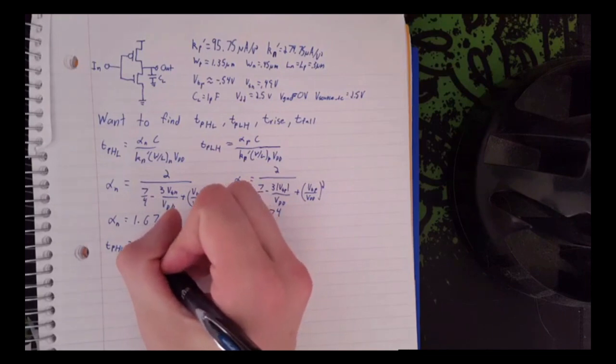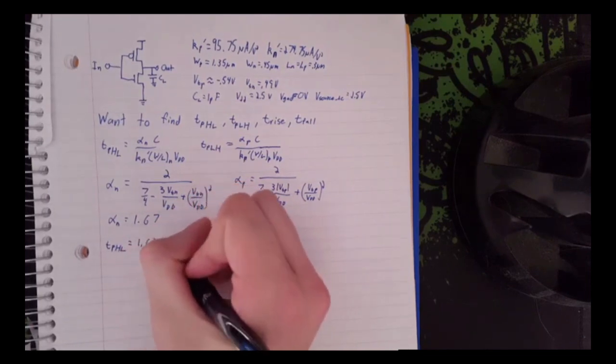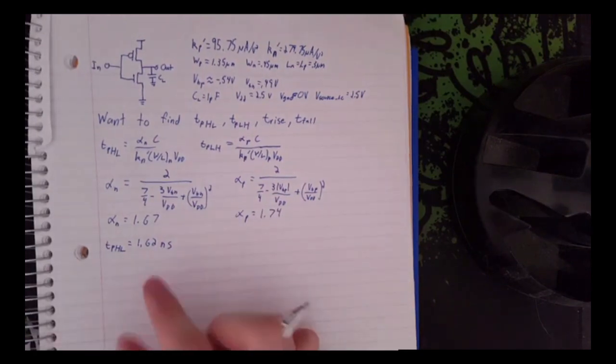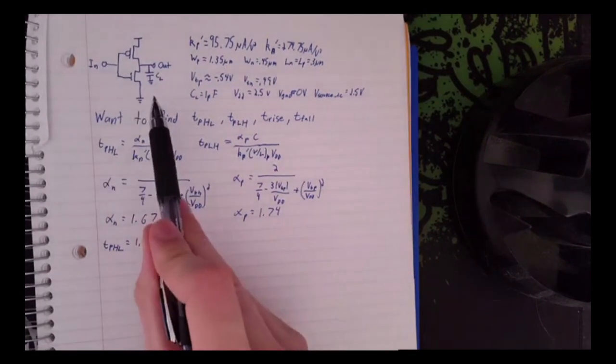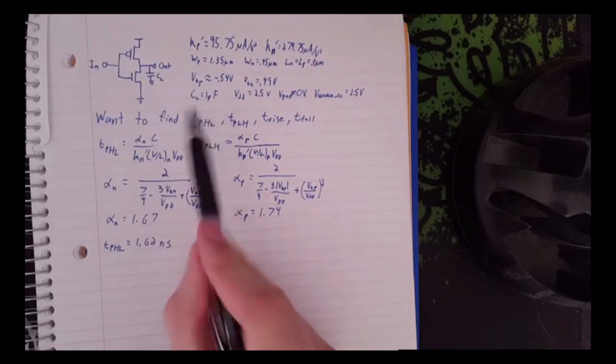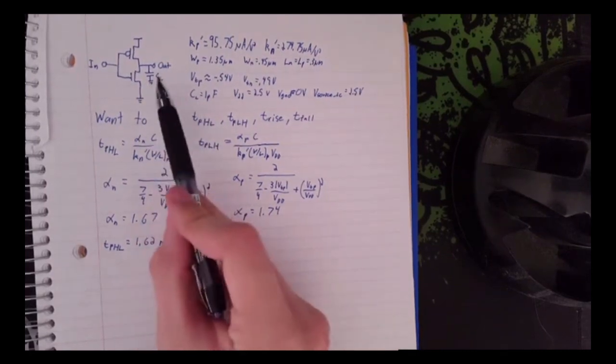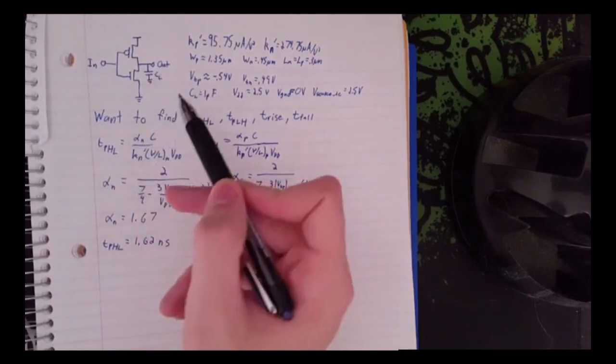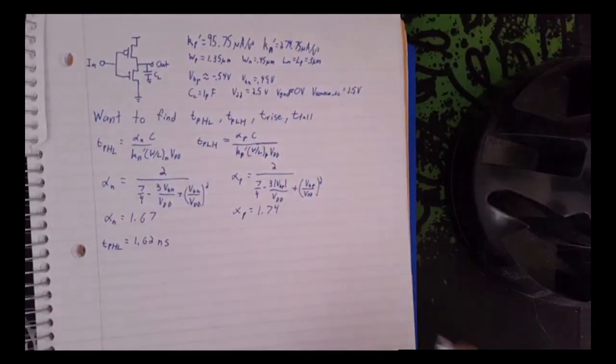We get a TPHL of 1.62 nanoseconds. As you can see, there's a very small delay because this load capacitor is in picofarads. The predominant source of the delay is this capacitor. So the smaller it is, the quicker our response will be.